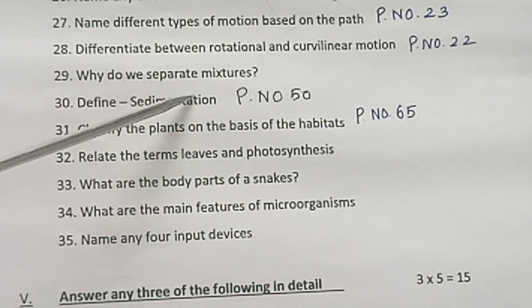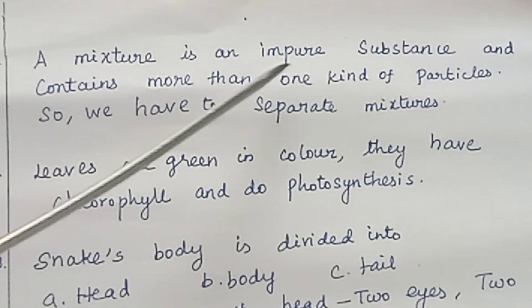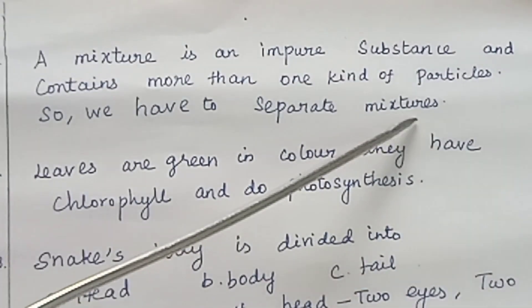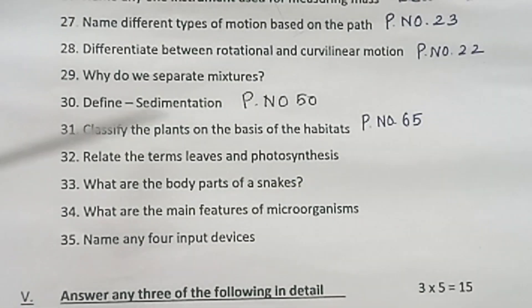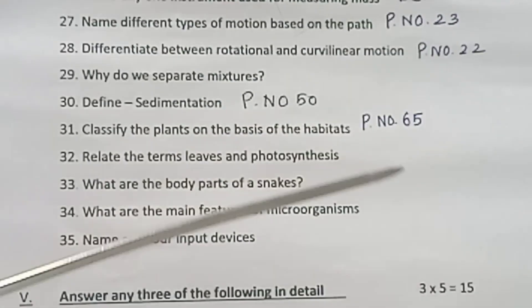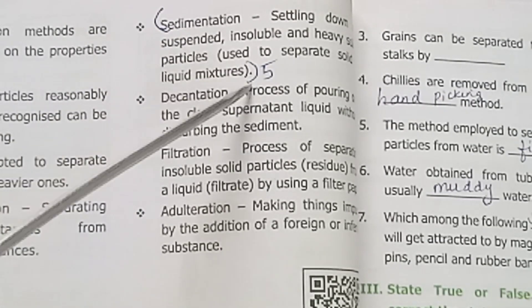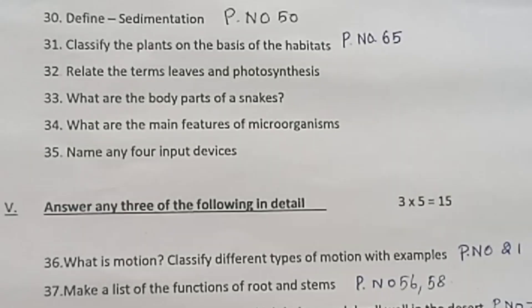Question 29. Why do we separate mixtures? A mixture is an impure substance and contains more than one kind of particles. So we have to separate mixtures. Question 30. Define sedimentation. Page number 50. Sedimentation is for liquid mixtures.